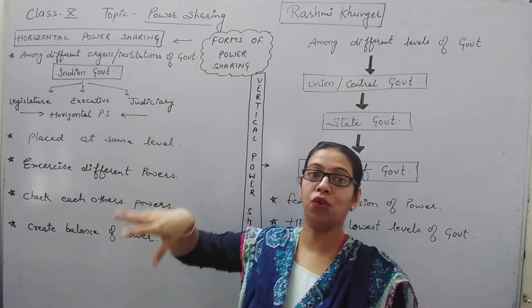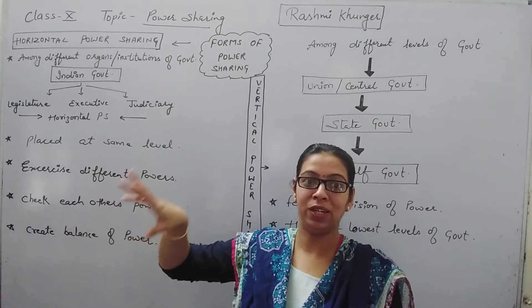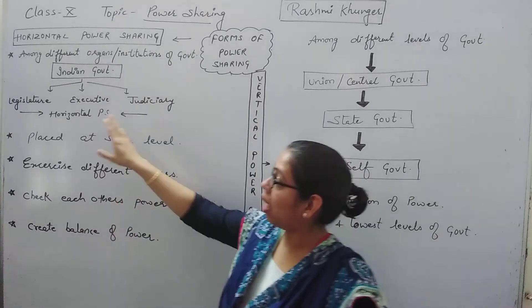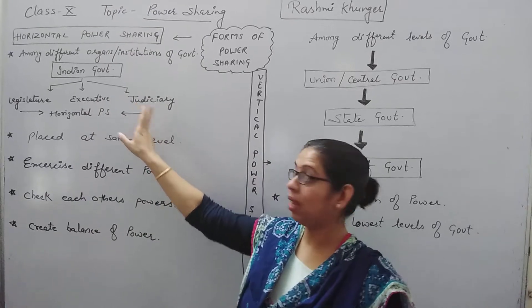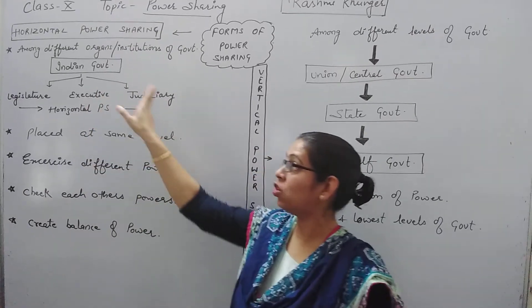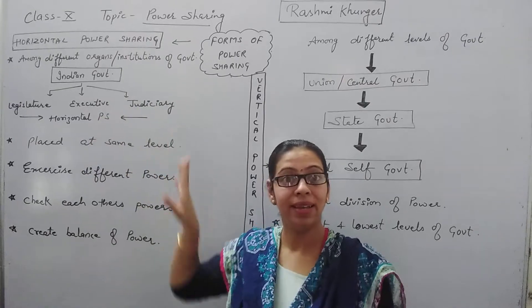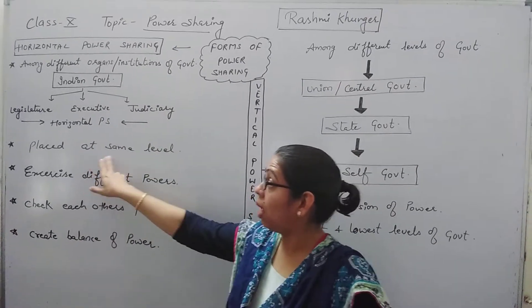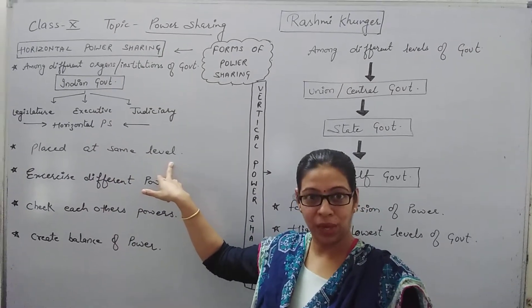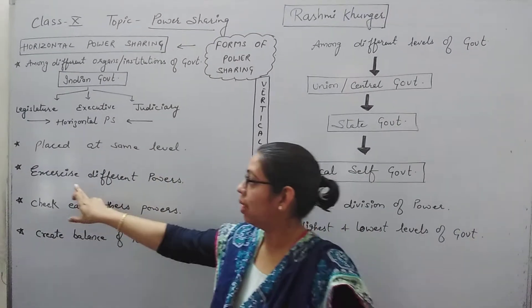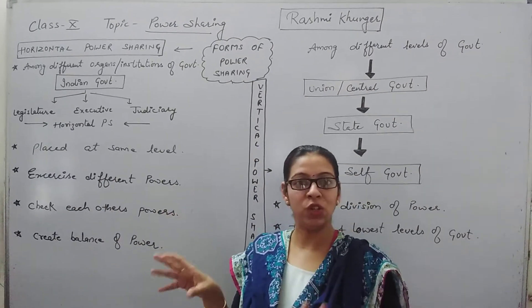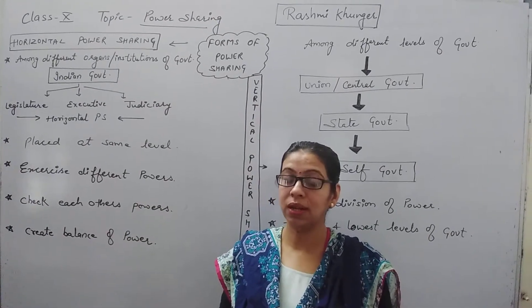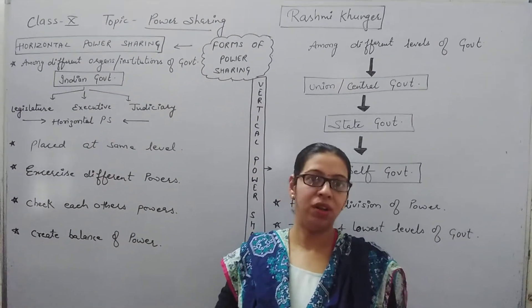Sometimes students answer that judiciary is more important than others — no. All three are equally important because Legislature controls Executive and Judiciary, Executive controls Legislature and Judiciary, and Judiciary controls Legislature and Executive. That's why it is horizontal power sharing — they are all placed at the same level, no one is more important. They exercise different powers: Legislature makes laws, Executive implements them, and Judiciary solves disputes whenever they occur.